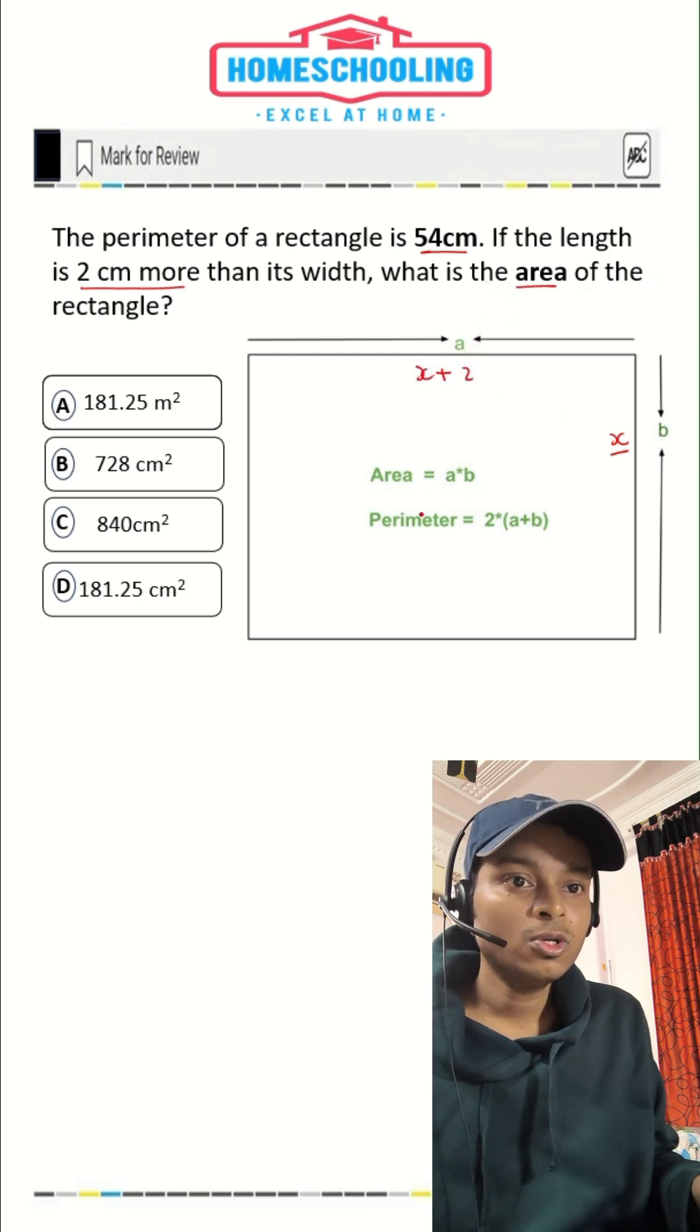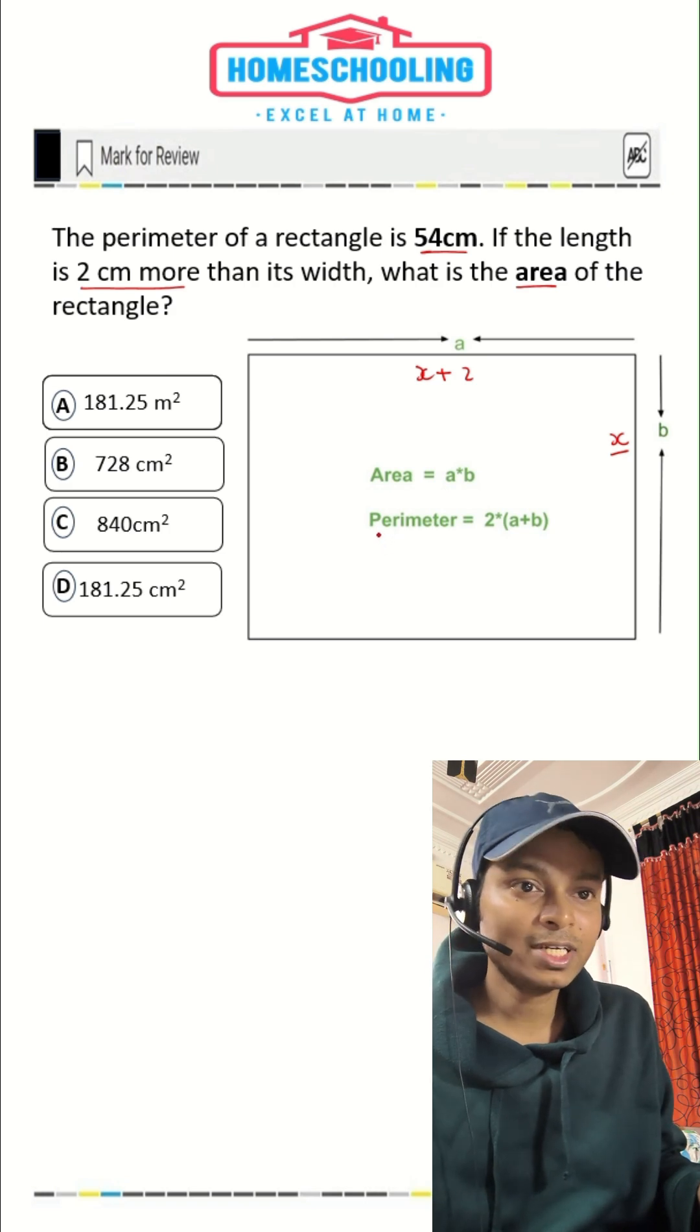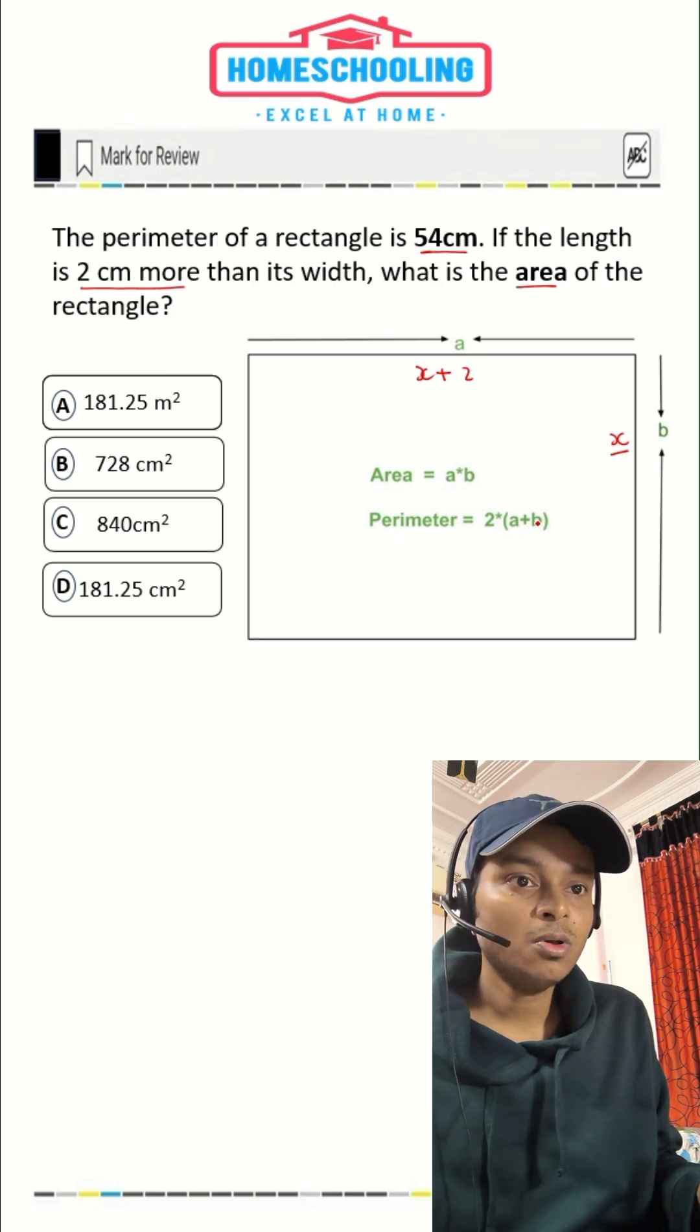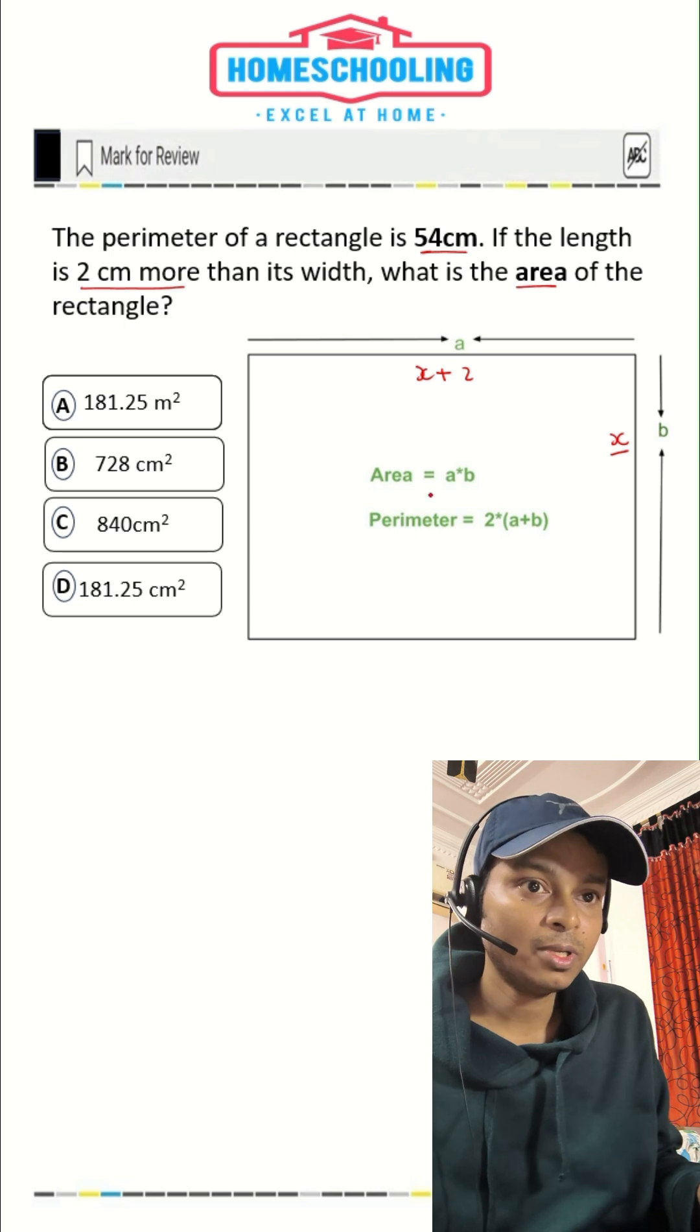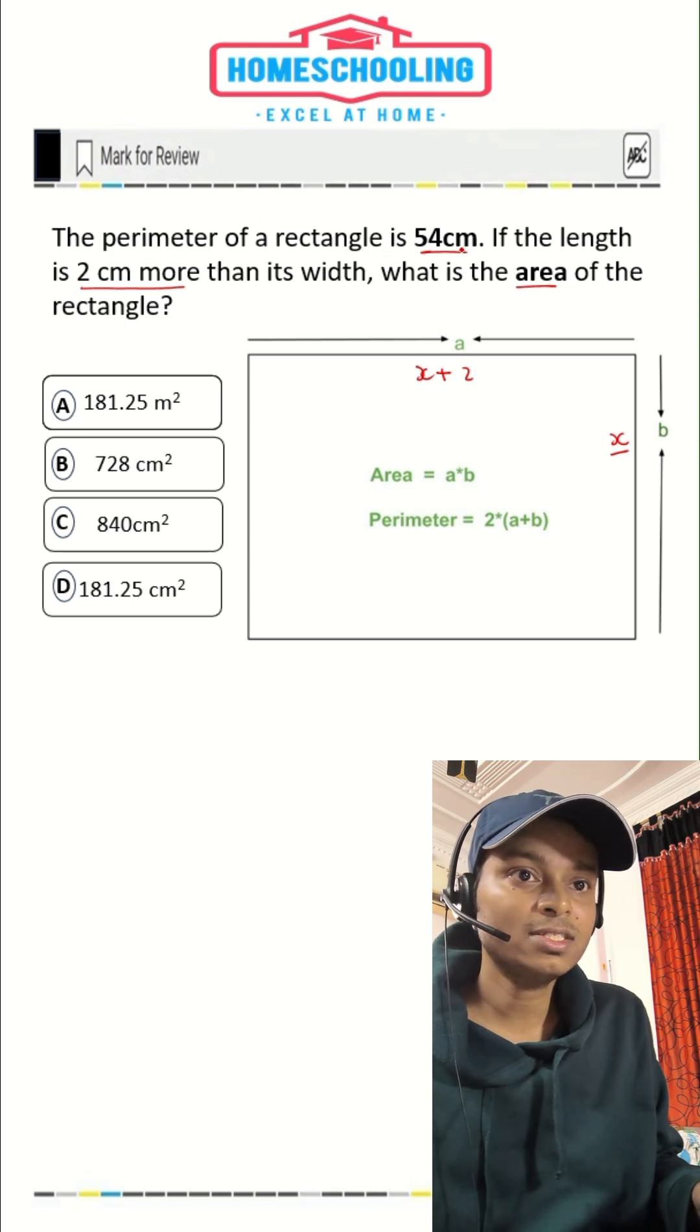So we have to find what is the area. As we know, the perimeter of a rectangle is two times length plus width. In the question, the perimeter of the rectangle is given, that is 54.